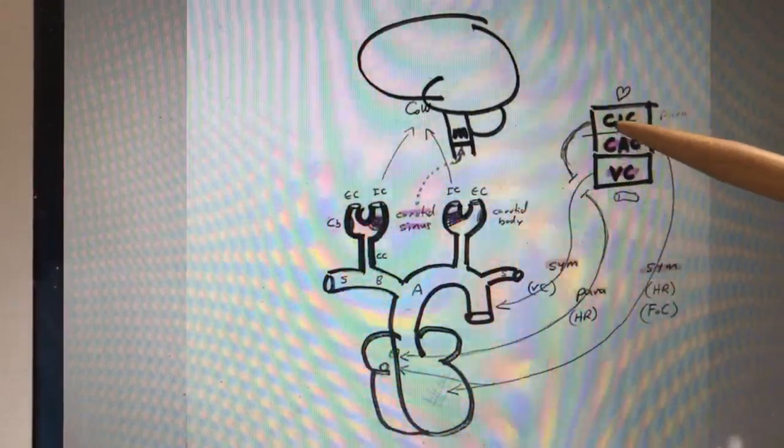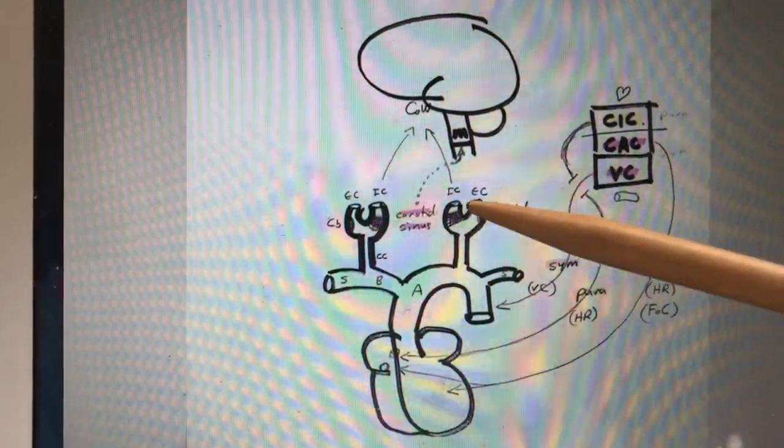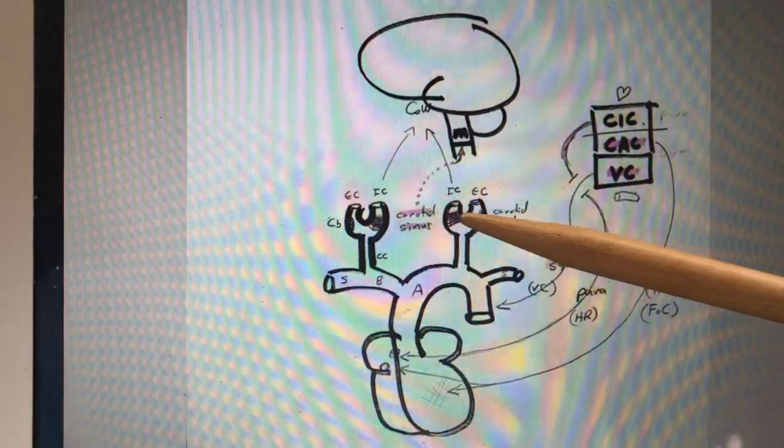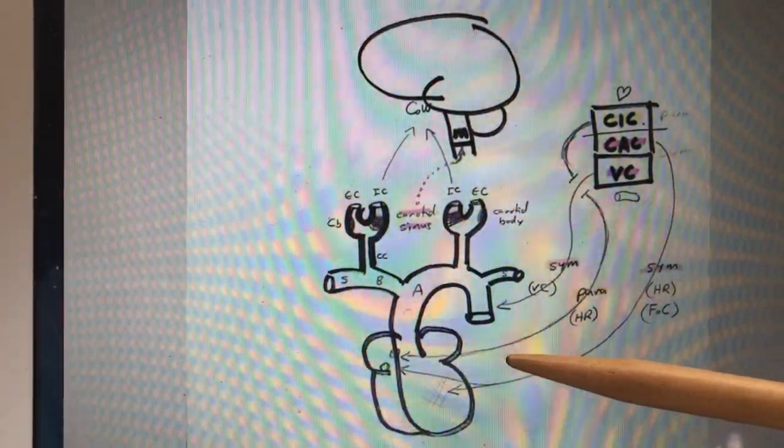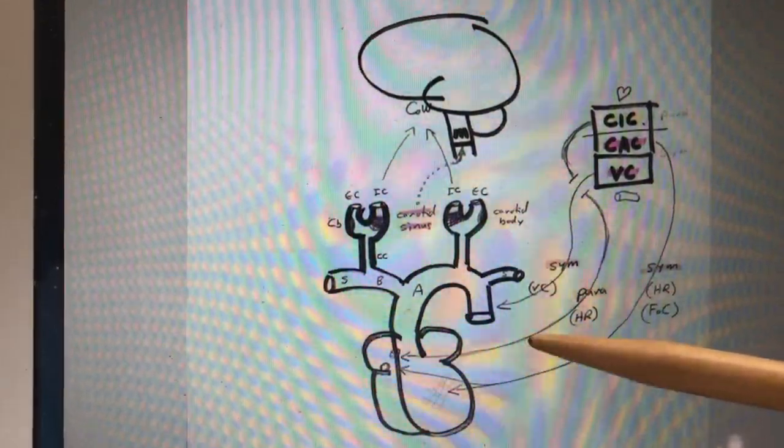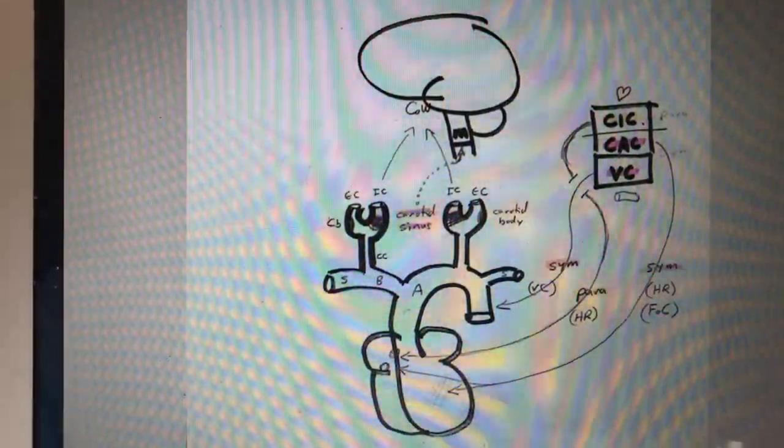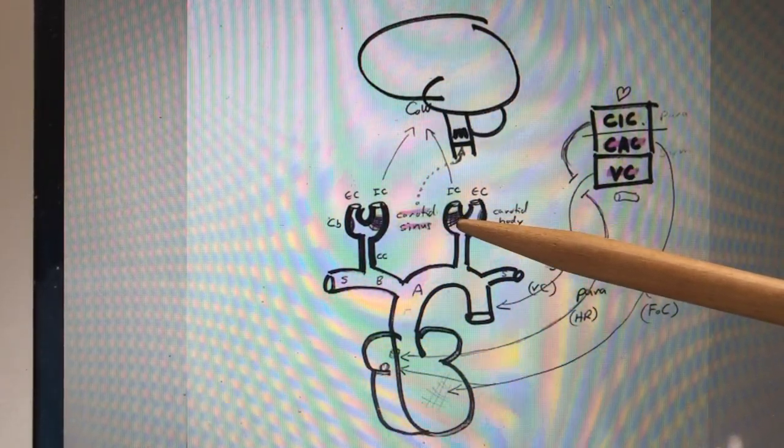So the carotid sinus, communicating with these three centers within the medulla, can respond to high blood pressure by getting the heart rate to go down, the force of contraction to go down, and the vasoconstriction to become less, thus solving the problem. If we reverse this and say the blood pressure was too low,